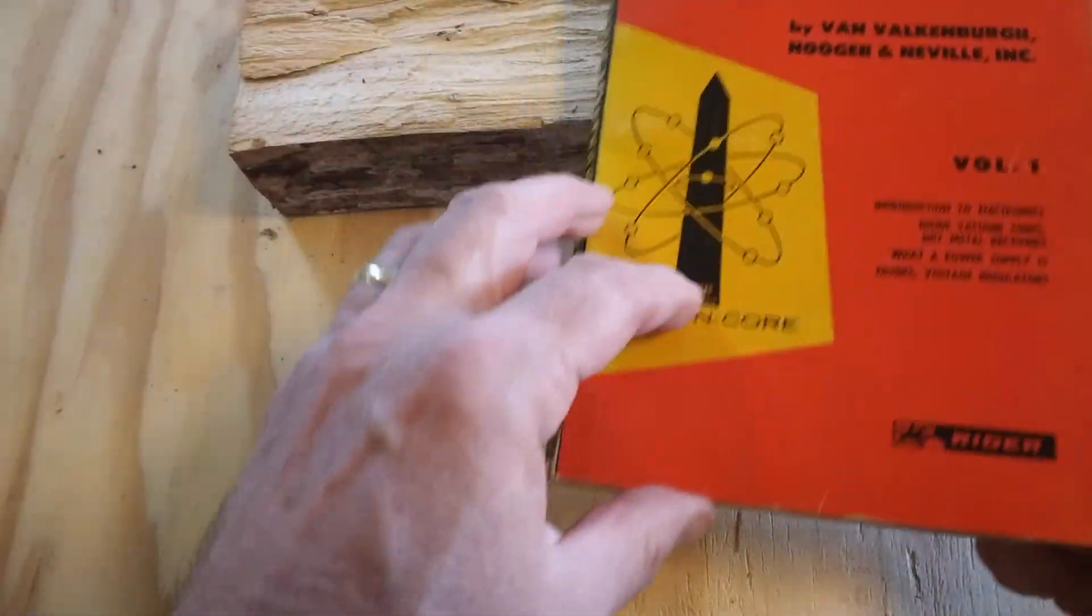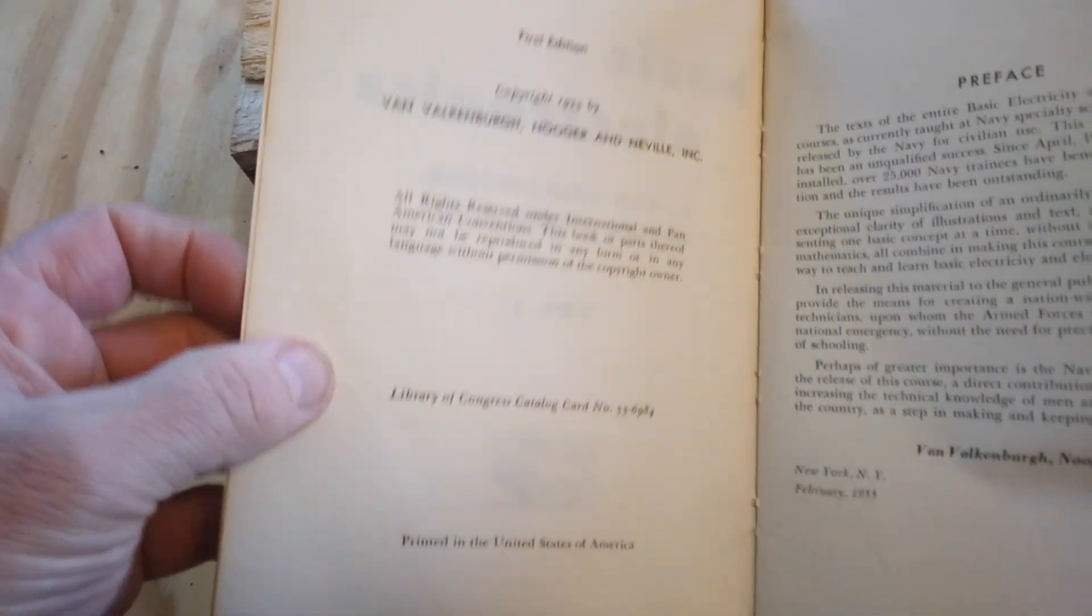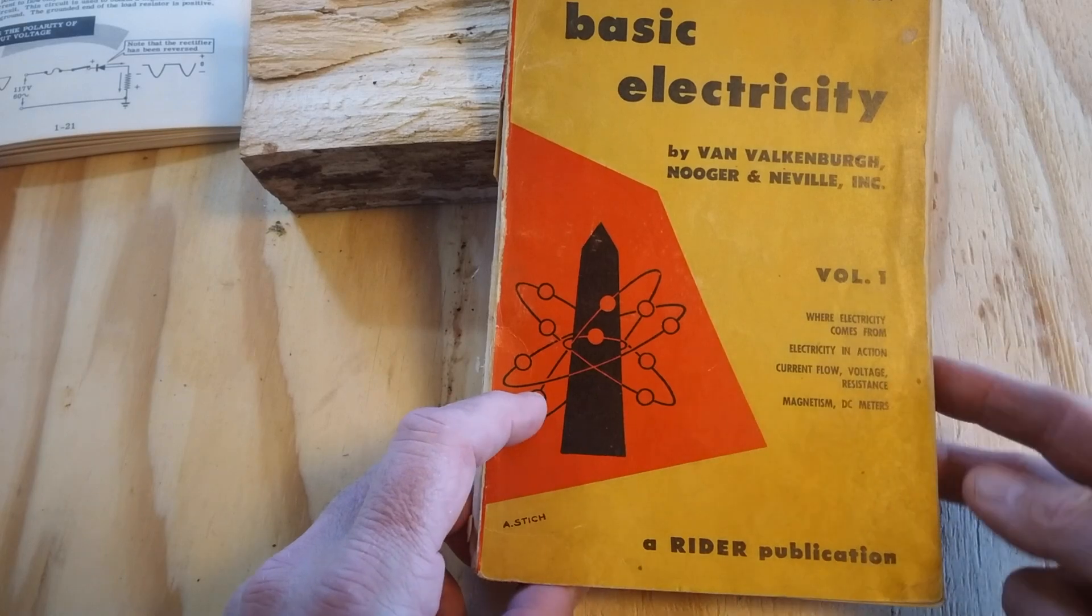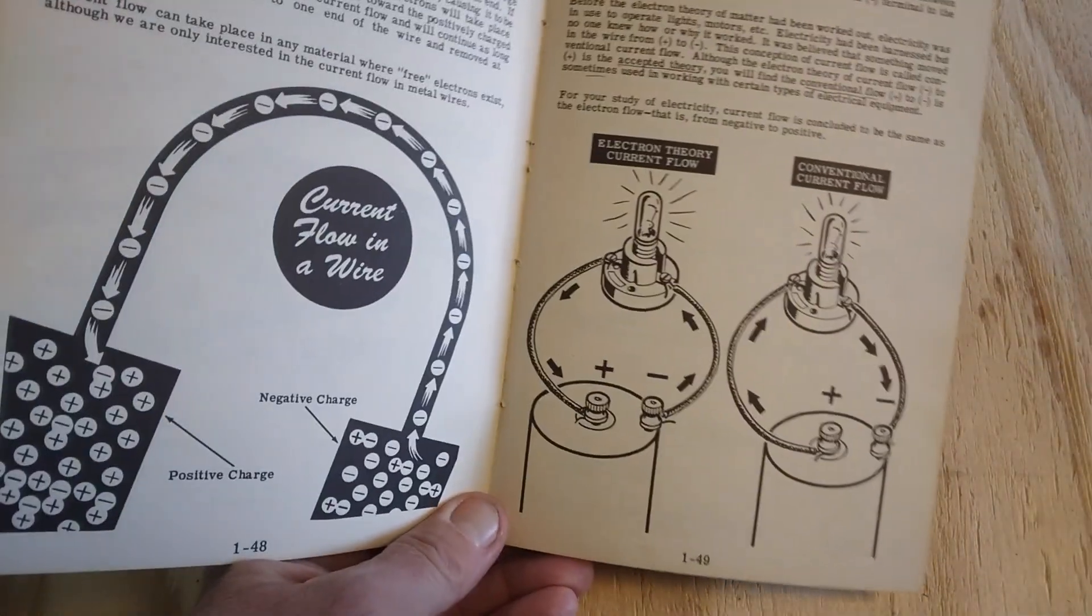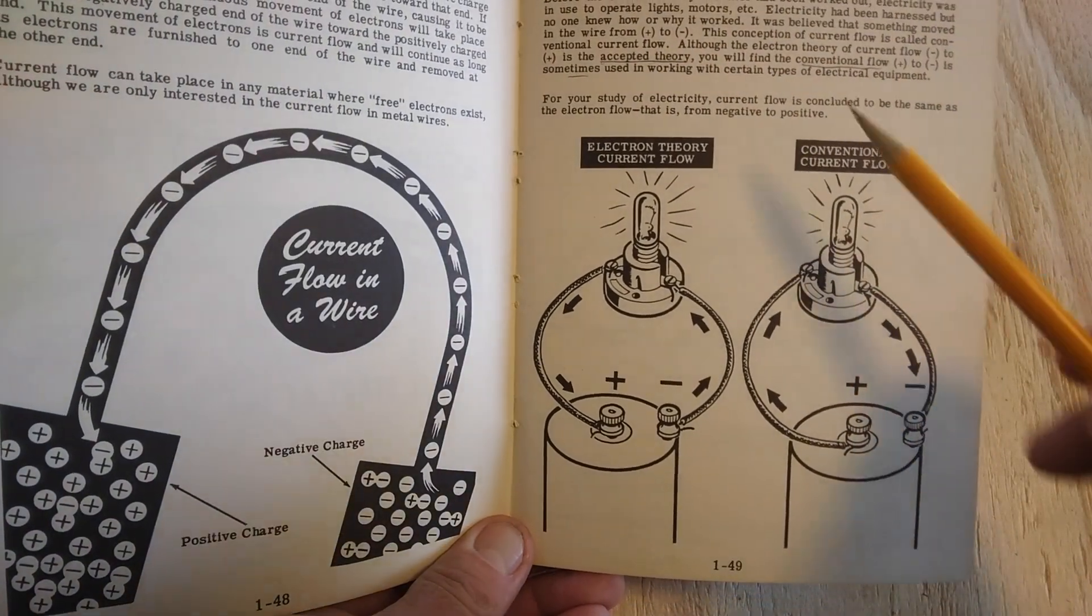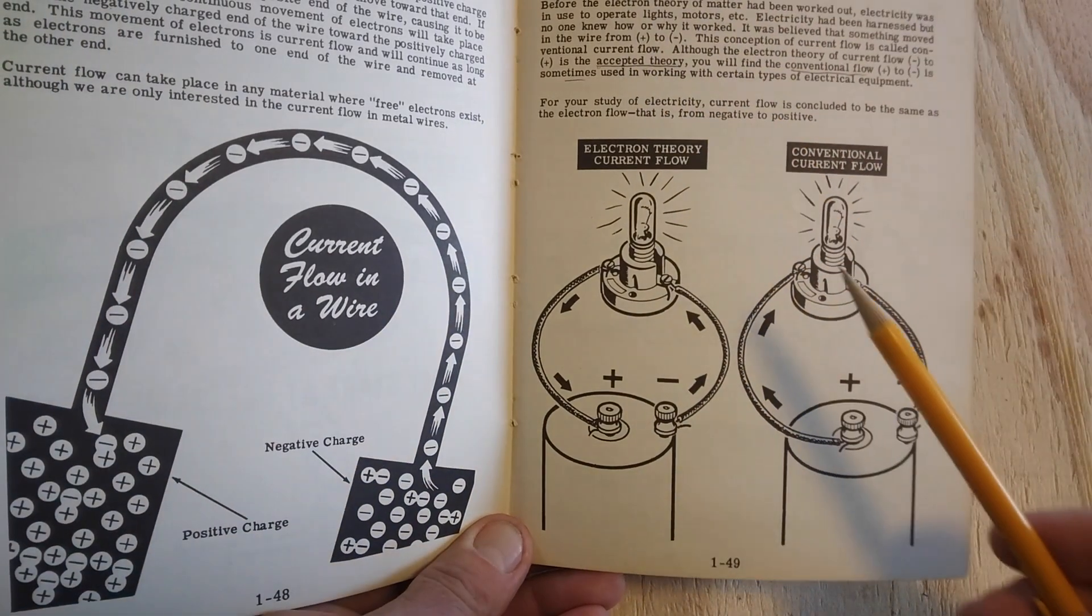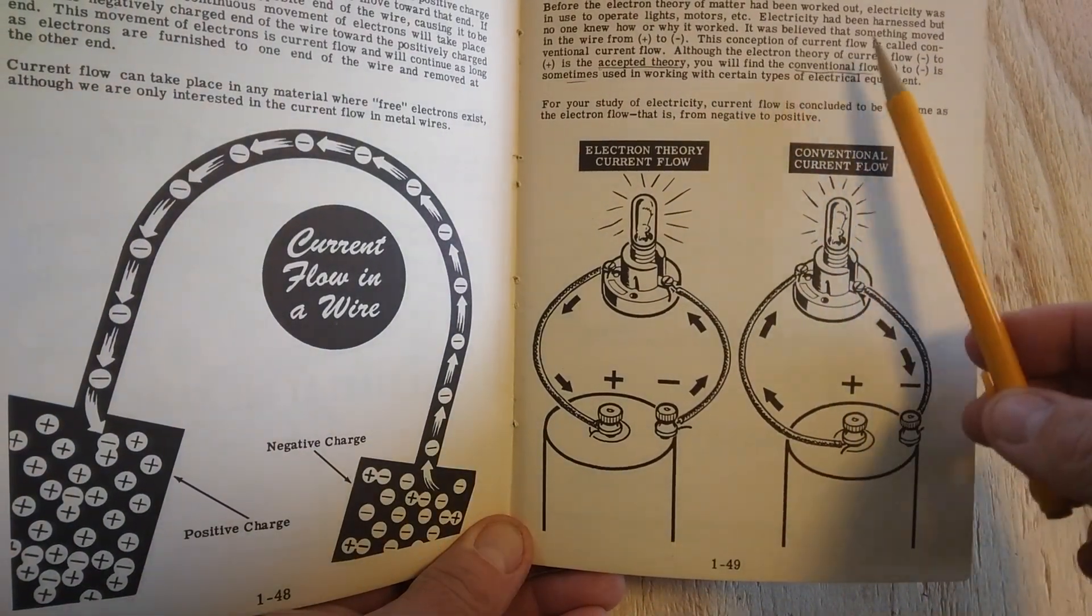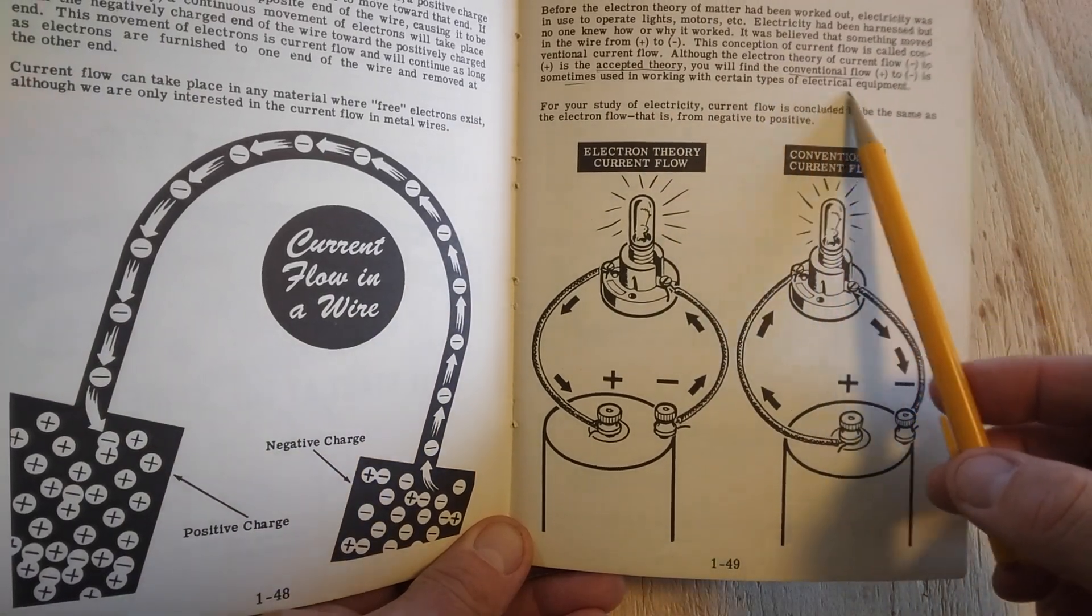And this book is around that same time frame, 1955. And these are some older books that were given to me by my uncle. And this is how they were teaching back in the 1940s and 50s, that the electron theory of current flow is the accepted theory. But you'll still find the conventional flow sometimes used in certain types of electrical equipment.